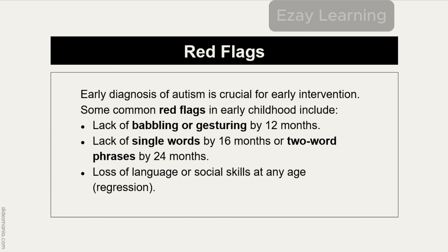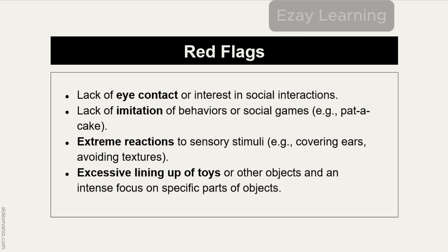Another red flag is lack of single words by 16 months. If there is any speech delay — specifically lacking one word by 16 months and lacking two words or phrases by 24 months — this is a concern. Loss of language or social skills at any age is also a red flag. If the child shows any regression, this could indicate the presence of autism.